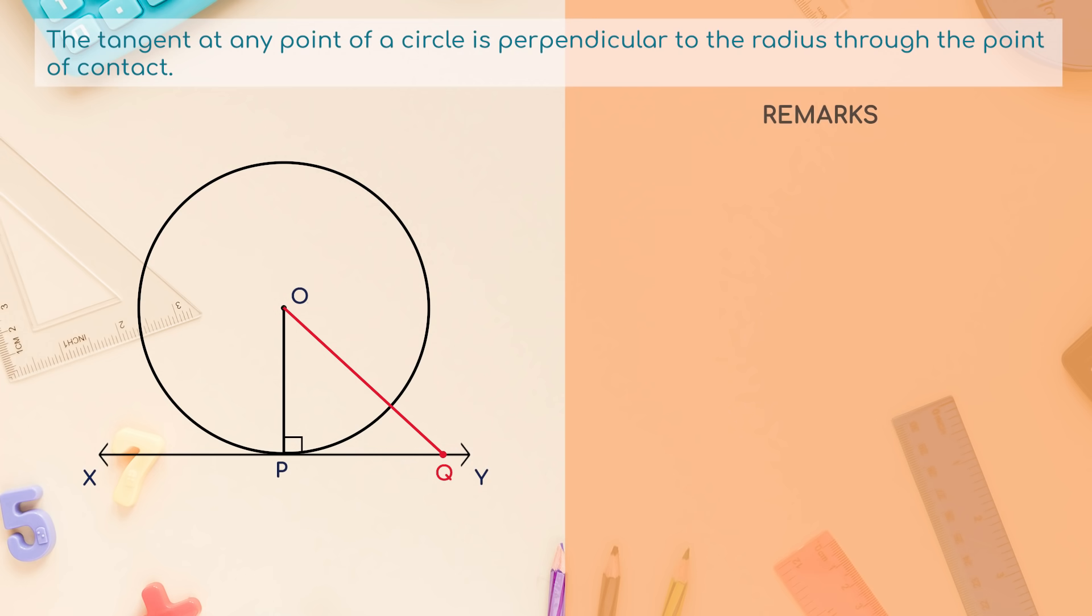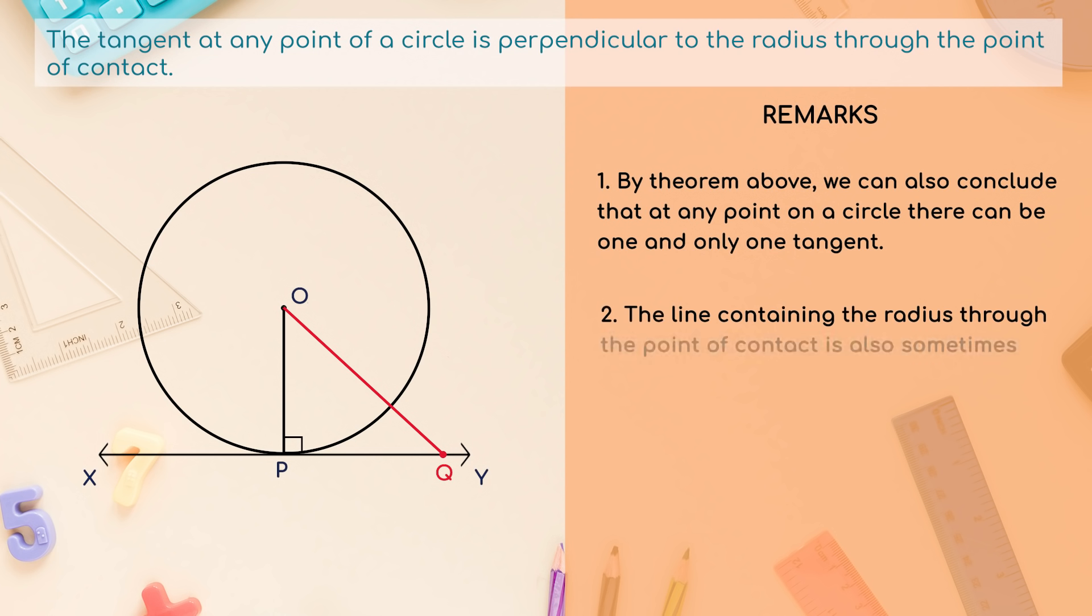Remarks: 1. By theorem above, we can also conclude that at any point on a circle there can be one and only one tangent. 2. The line containing the radius through the point of contact is also sometimes called the normal to the circle at the point.